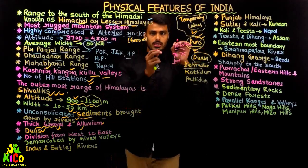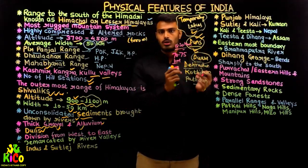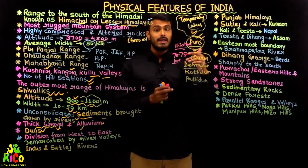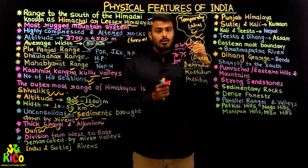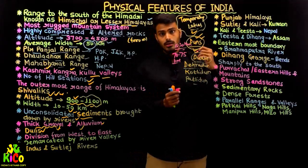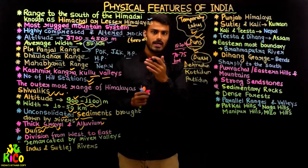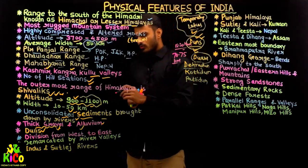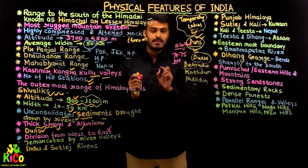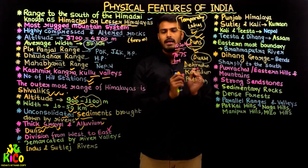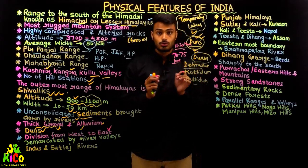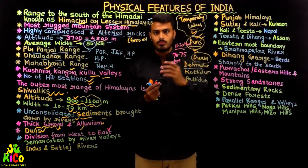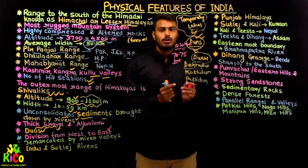This entire valley is called the Dun valley. It is naturally formed but has taken a very long time to form. Now, the division of the Himalayan mountain range is not only from top to bottom vertically, but also from left to right — that is, from west to east horizontally.